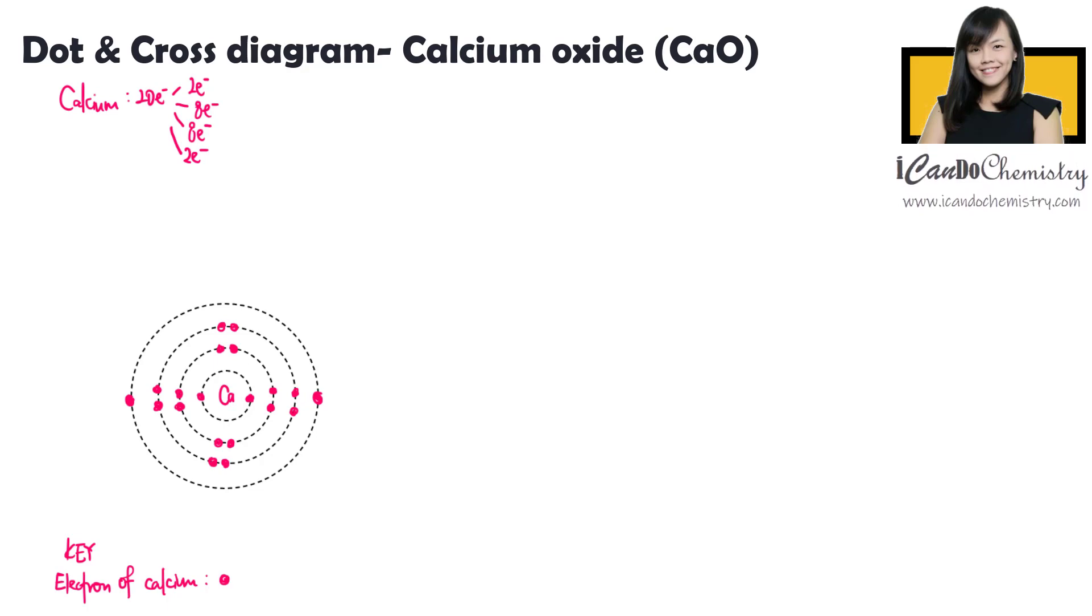Calcium atom would love to donate these two electrons to a non-metal atom so that it can achieve an octet configuration.